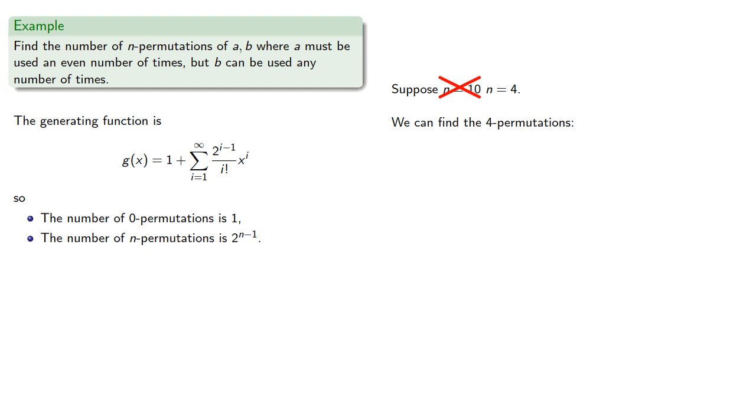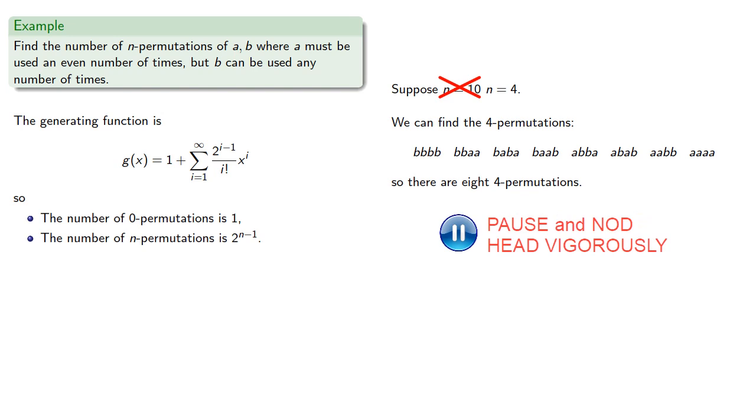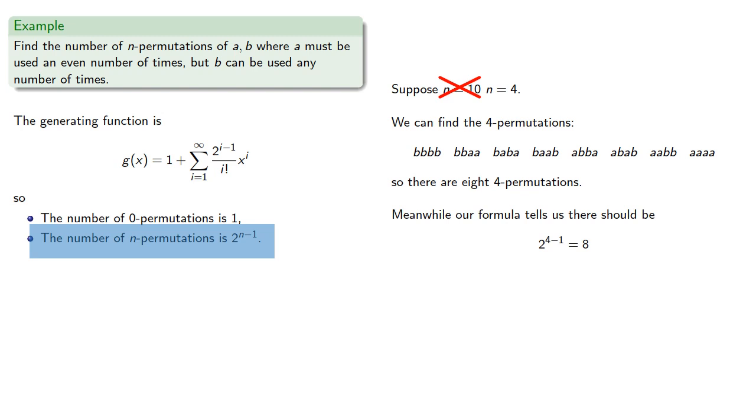So either a is used 0 times, and so b has to be used 4 times, or a is used 2 or 4 times, and if we do that we get the permutations. And so there are 8 four permutations. Meanwhile, our formula tells us there should be 8 four permutations, which matches.